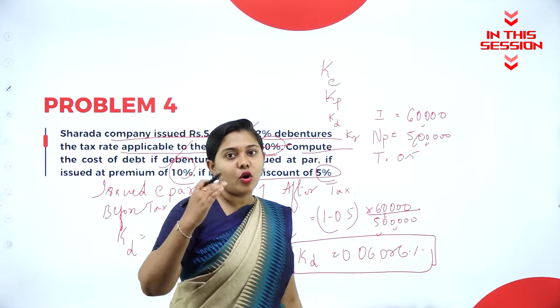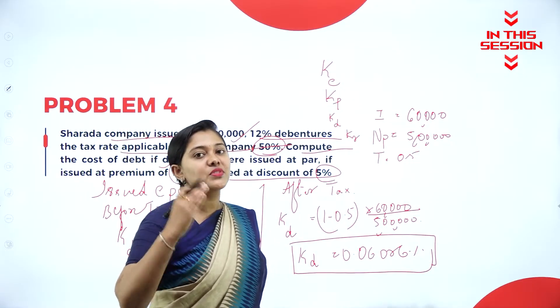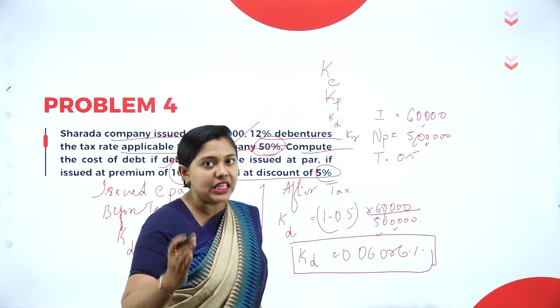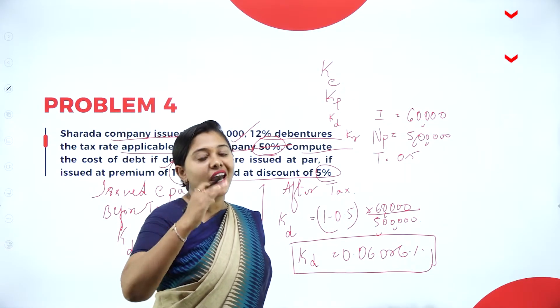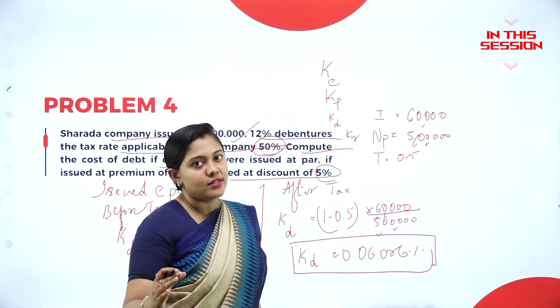Regarding notation — subscript and superscript: cost of equity is written as K subscript E. You should understand the difference between superscript and subscript.